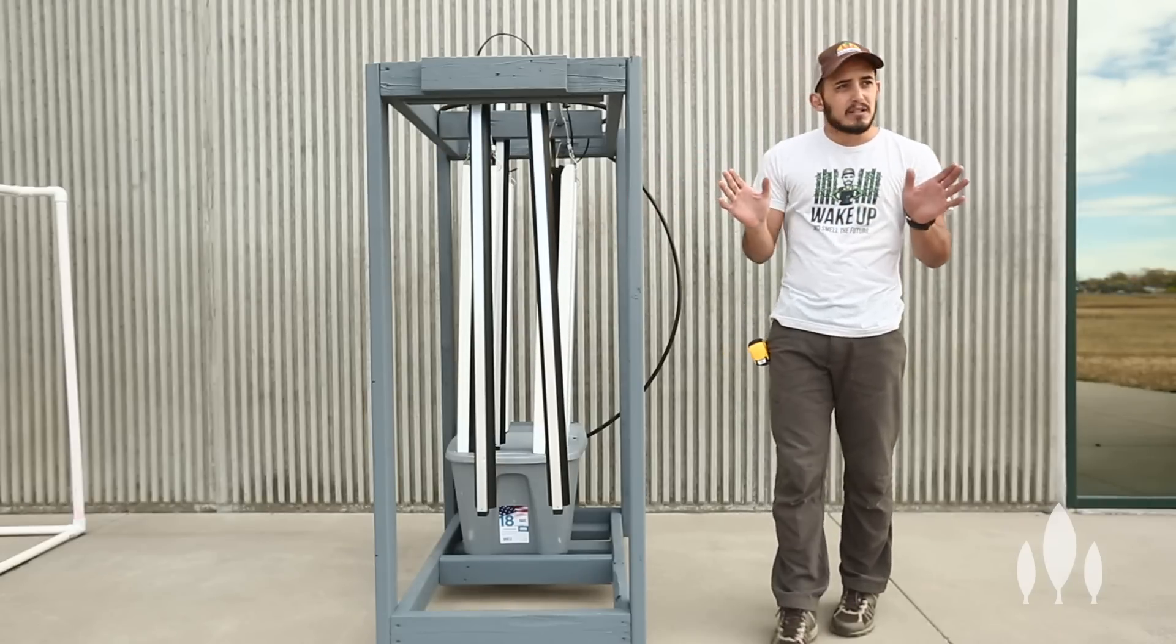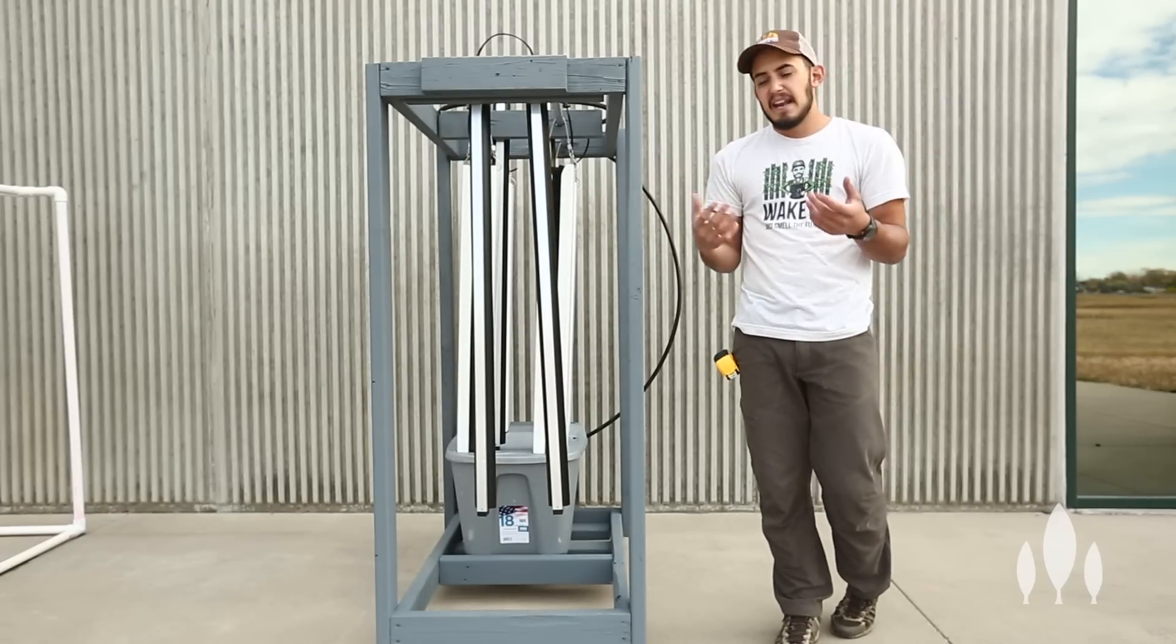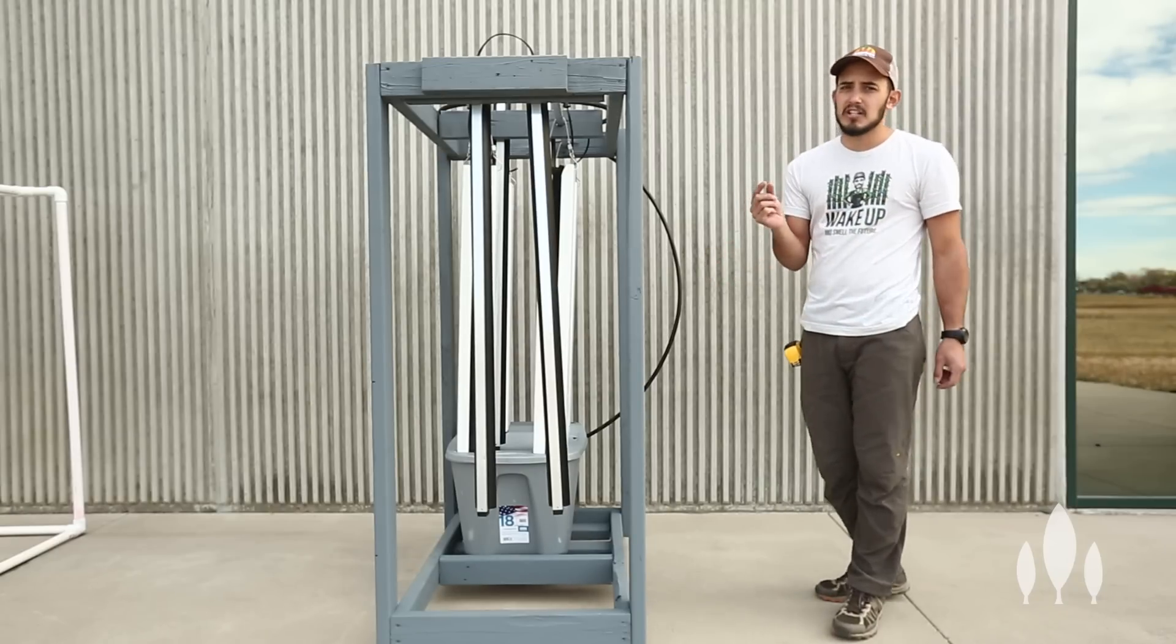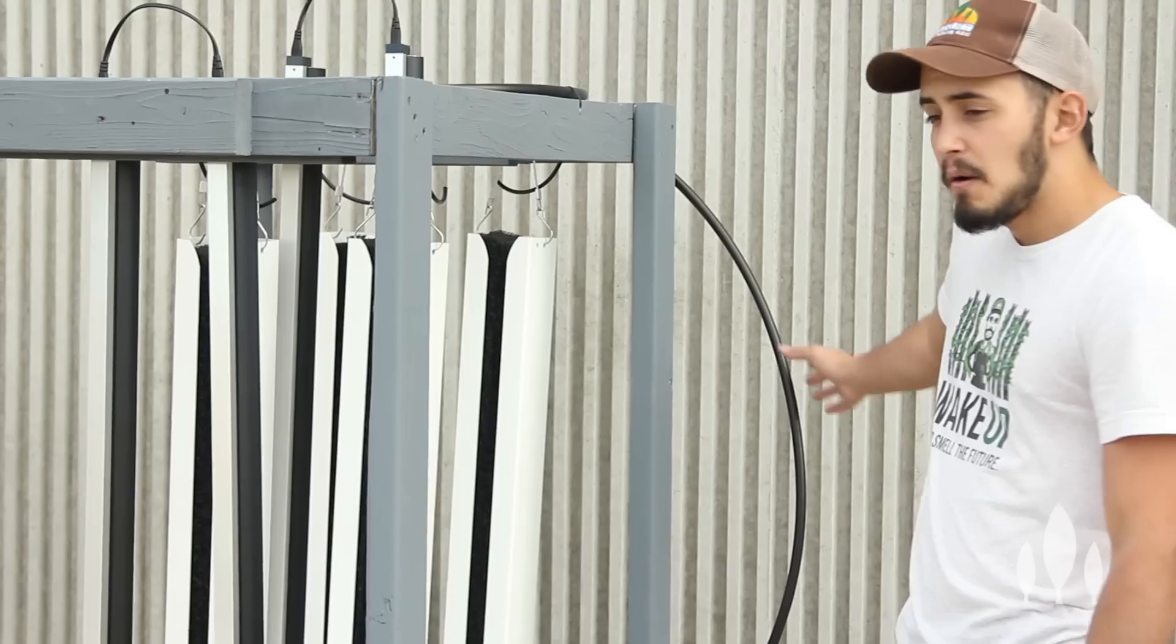So when we plant these towers, which we're gonna do after this, we're able to move our lights right on top of those seedlings and then as they grow we can pull our lights back. It's the same idea, same dimensions, just a little bit more functionality.